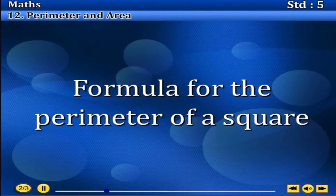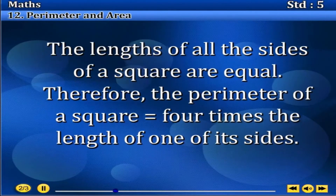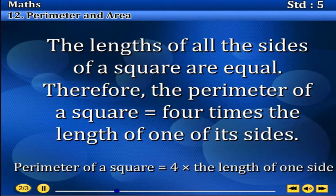Formula for the perimeter of a square. The length of all the sides of a square are equal. Therefore, the perimeter of a square equals 4 times the length of one of its sides. Perimeter of a square equals 4 into the length of one of its sides.